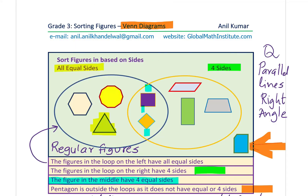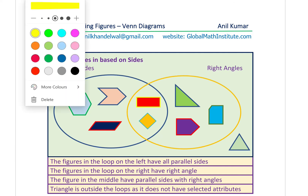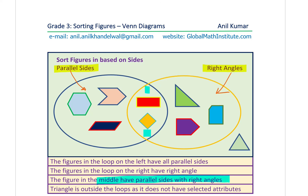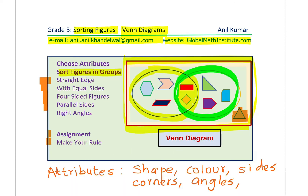Here is how I sorted them. The left loop contains all figures with parallel sides, and the right loop contains figures with right angles. Figures with both parallel sides and right angles go in the middle. As an exercise, try to do this with different figures — create your own figures and sort them. It will be very interesting and useful.